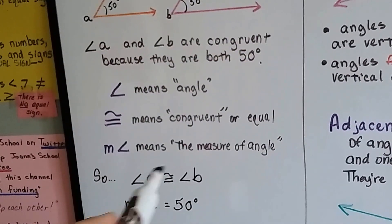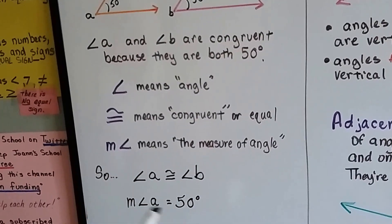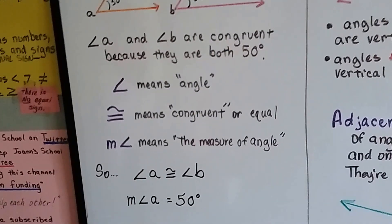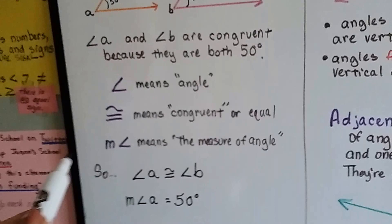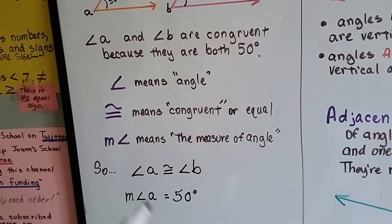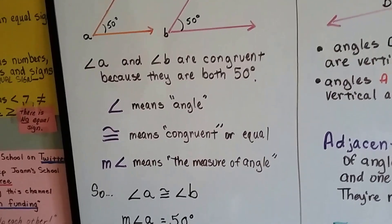So, this is a shorthand way of writing this information, so we don't have to write it out real long like the measure of an angle. We just put an M and then that little angle shape. Saves us time.